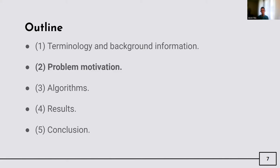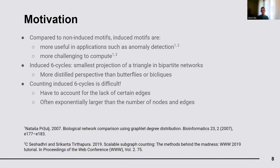Why is this so important? Well, in general, it is well known that induced motifs, also known as graphlets, are more useful than non-induced motifs in real-world applications such as anomaly detection, but also remain more challenging to compute. As the smallest projection of a triangle in bipartite networks, induced six-cycles offer a more distilled perspective than the butterfly. Therefore, we expect that applications such as community discovery, anomaly detection, and graph classification will use the induced six-cycle as the main building block. In that respect, fast algorithms are essential.